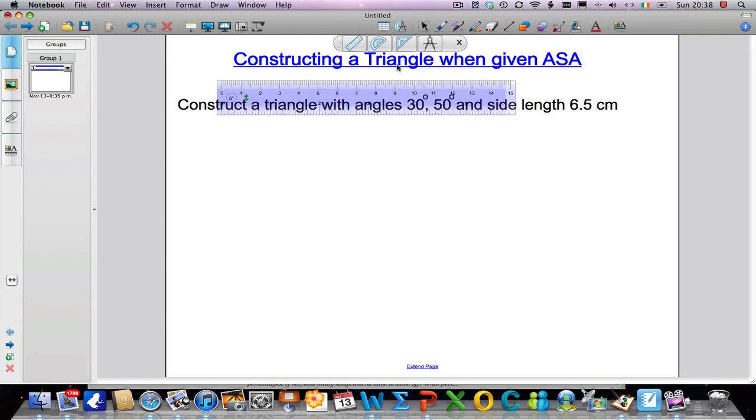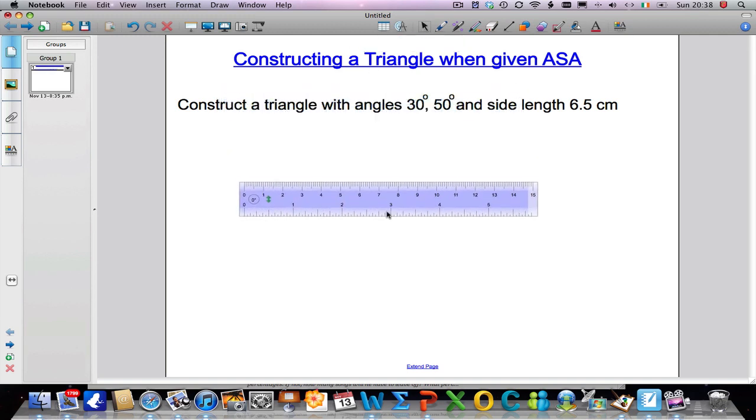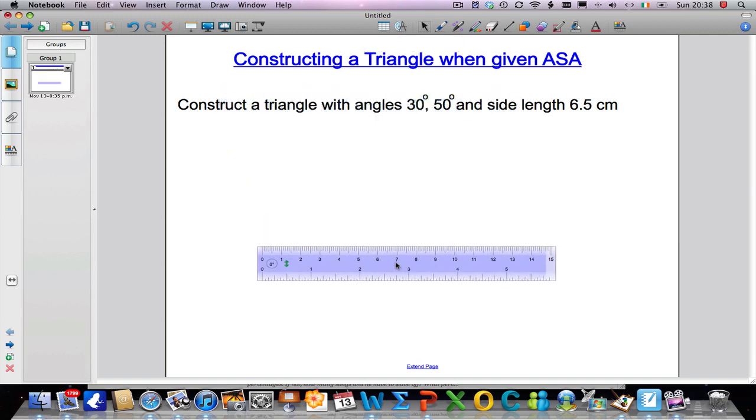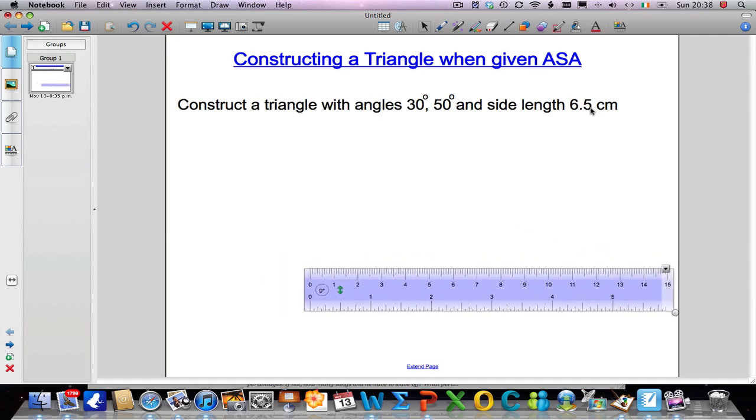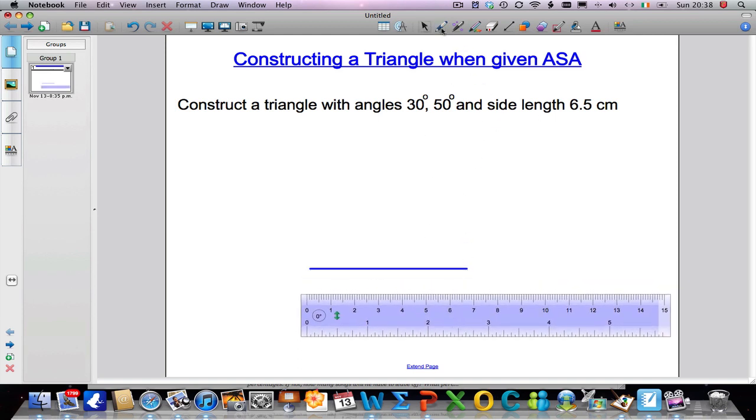We are going to start off by getting ourselves a ruler. So I will take a ruler. Let's make it a little bit bigger. I am going to take a ruler and I am going to measure a side that is 6.5 cm long. It goes from 0 up as far as 6.5 cm long. I am going to take my ruler away and label my side. So this is 6.5 cm long. That is step 1.